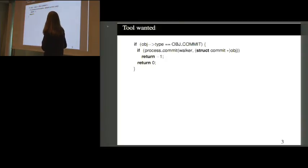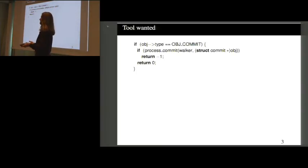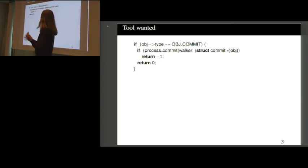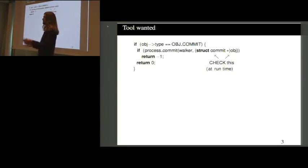Here's a real snippet of C code from Git. The program has some tests where it checks a pointer called obj, does some logic — tests whether a field equals some value — and if it does, it believes obj is pointing to an object of a certain type, so it casts that pointer to struct commit. But because this is C, the compiler doesn't check anything, the runtime doesn't check anything. There's no checking at all — it just proceeds on the assumption that the cast is correct.